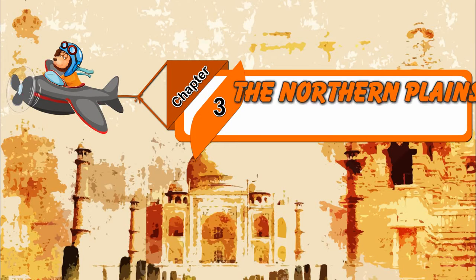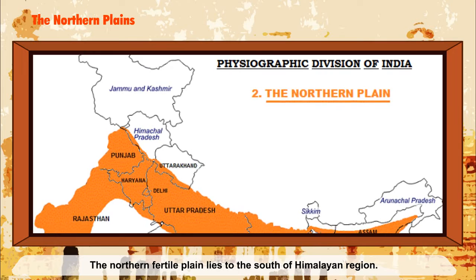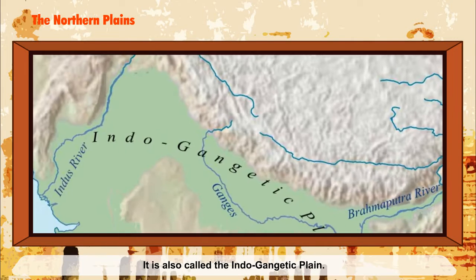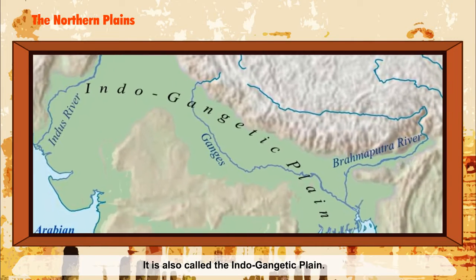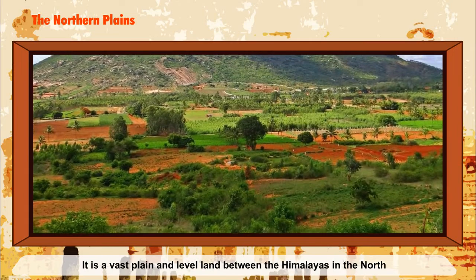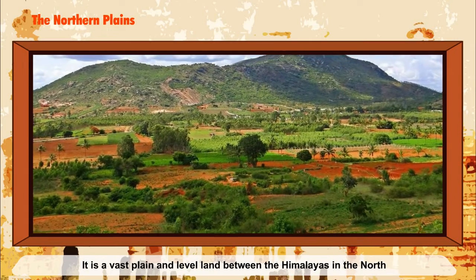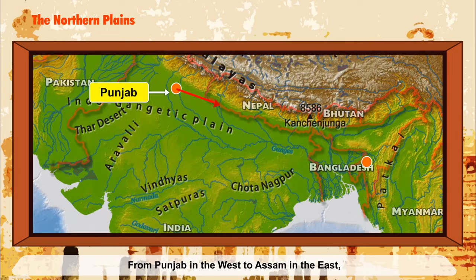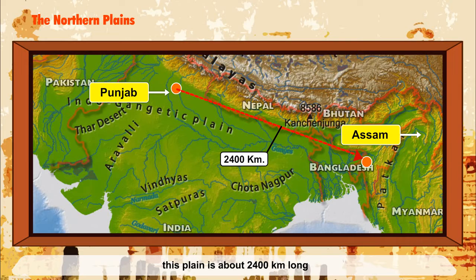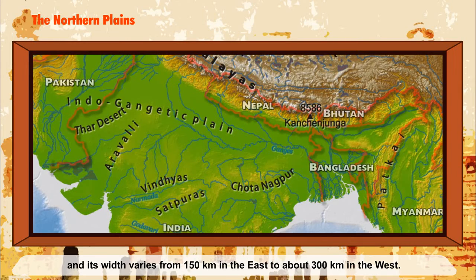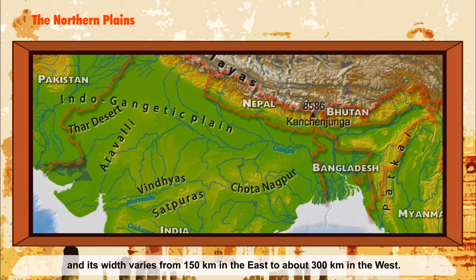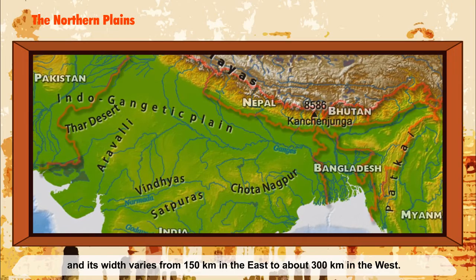Chapter 3: The Northern Plains. The Northern Fertile Plain lies to the south of the Himalayan region. It is also called the Indo-Gangetic Plain. It is a vast, level land between the Himalayas in the north and the Deccan Plateau in the south. From Punjab in the west to Assam in the east, this plain is about 2400 km long, and its width varies from 150 km in the east to about 300 km in the west.